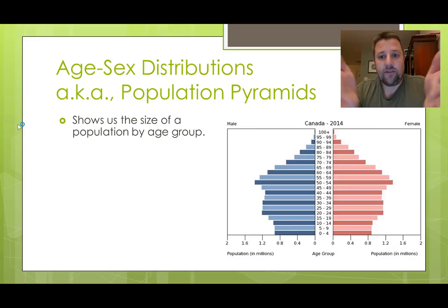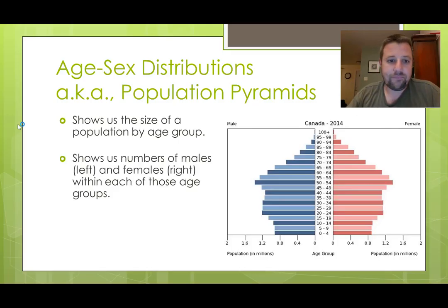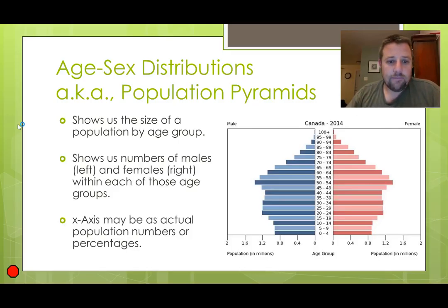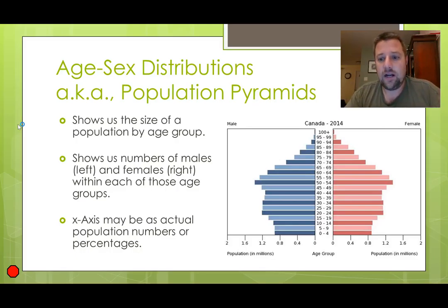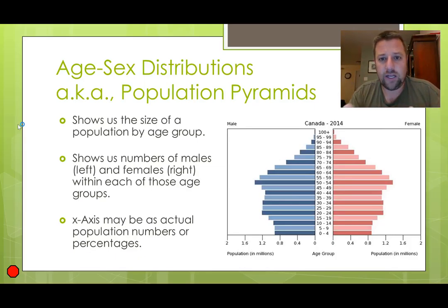You might be surprised that Canada's younger population is smaller in size than some of the older age groups. The x-axis at the very bottom is in millions of people, and these graphics will always tell you the size of that x-axis. So Canada has up to 1.4 million people in some of those age groups.